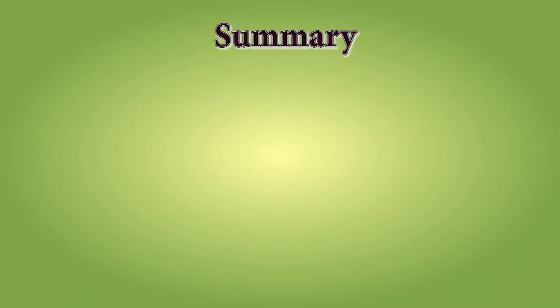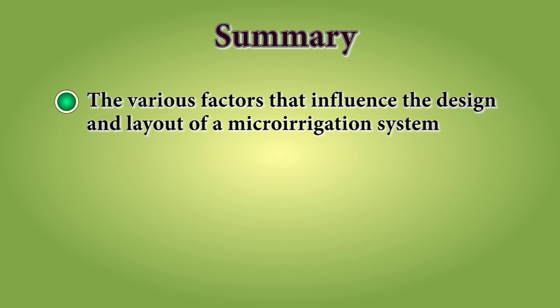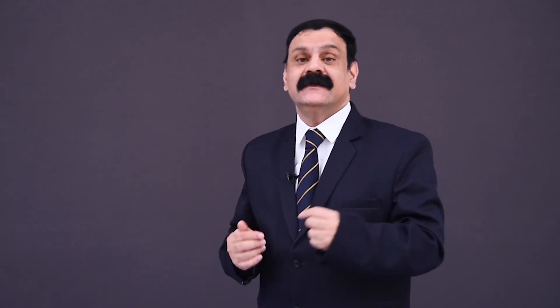To summarize, in this session you have learned about the various factors that influence the design and layout of a micro-irrigation system. You have also learned about the various components of drip and sprinkler irrigation systems so that you can easily install them as per the design and layout. In the next video, we will cover session 1 of unit 2. Enjoy learning.